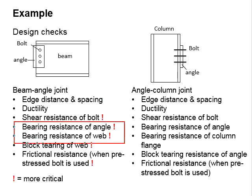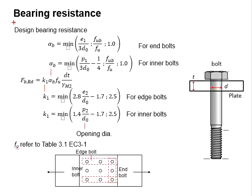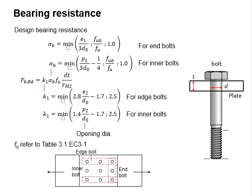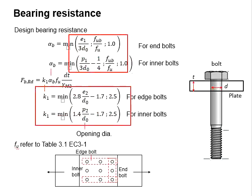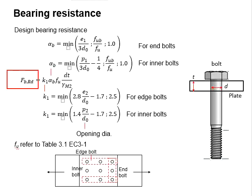Next we need to check for the bearing resistance of the angle and the bearing resistance of the web. The formula is given in this slide, which is a function of k1, alpha_b, fu, d, t, and the factor of safety. Theoretically you will have to check for the bearing resistance of the bolt acting on the angle and the beam web, as they refer to the same set of formulas. Provided the specifications are the same, the bearing resistance of the angle plate and the web will be governed by their thickness — whichever has a smaller thickness will be more critical.